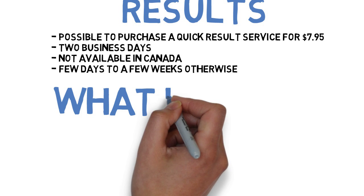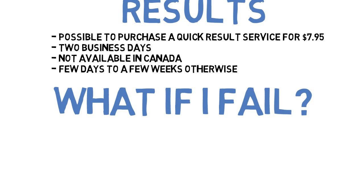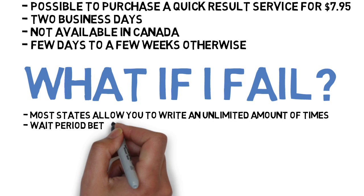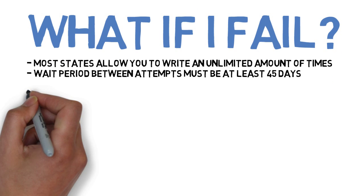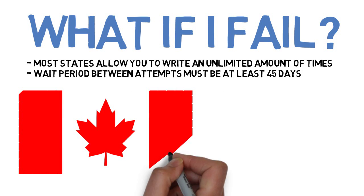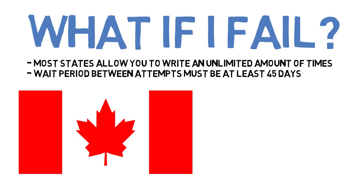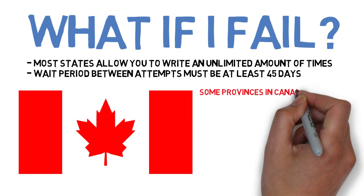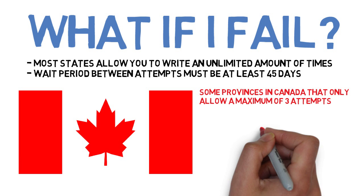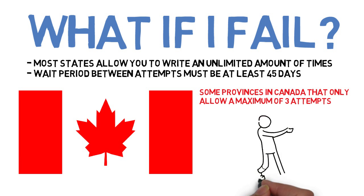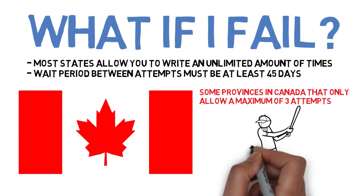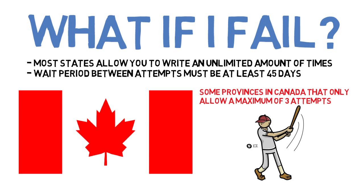What happens if you receive notice that you have failed the NCLEX? Thankfully it's not the end of the world. Most states allow you to write an unlimited amount of times, with a wait period of at least 45 days between attempts. There are provinces in Canada that only allow a maximum of three attempts, though these policies are slowly changing. Some states also have a limit on the number of attempts per year — check with your board of nurses for further information.